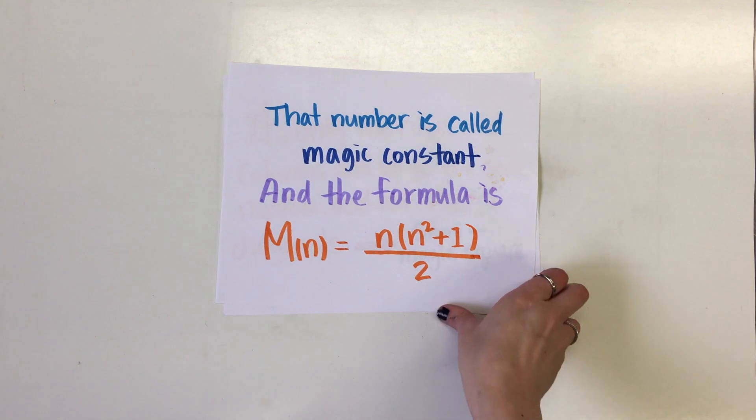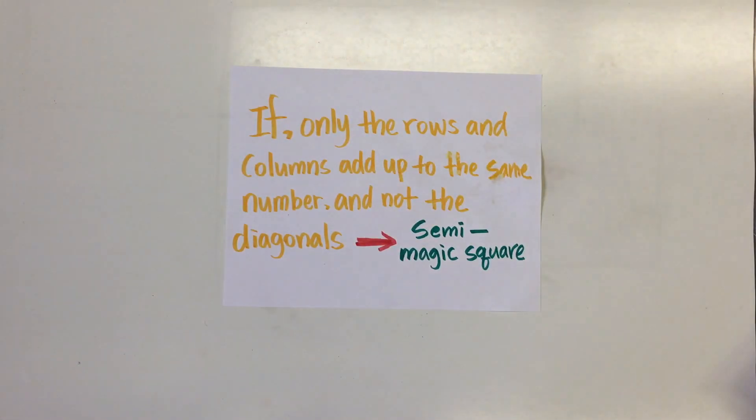Each of the entries are consecutive integers running from 1 to n². If only the rows and columns add up to the same number and not the diagonals, then we call the square a semi-magic square.